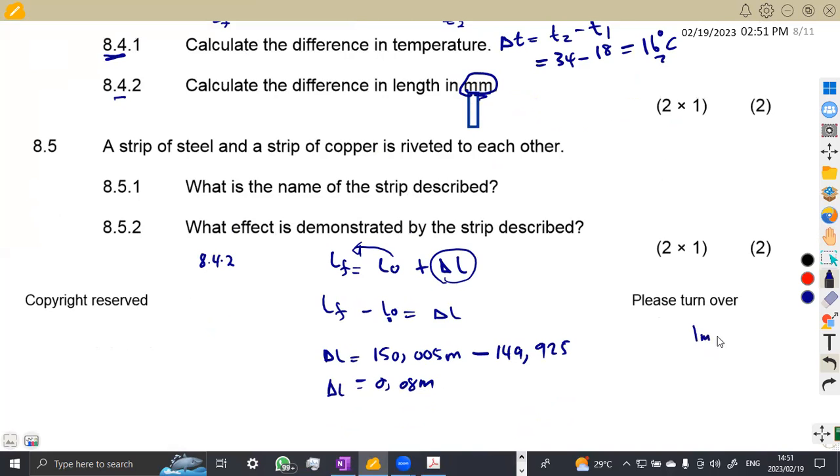Take note, for us to convert to millimeters as given here, we are supposed to take our conversion. One meter is equivalent to 1000 millimeters. So to convert 0.08 meters to millimeters, you multiply 0.08 over 1 times 1000. If you multiply by 1000, this is going to be 80 millimeters. So you're going to obtain your answer as 80 millimeters.